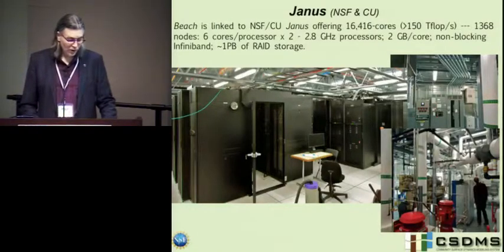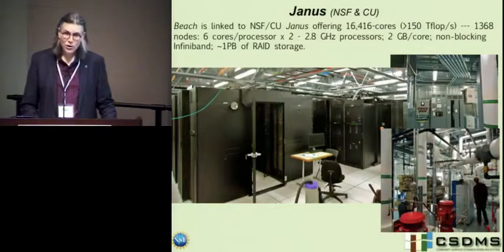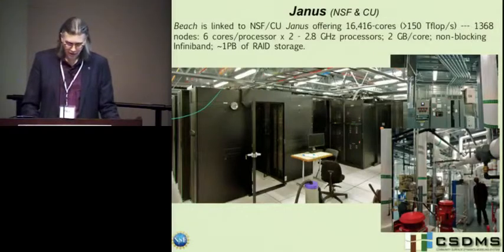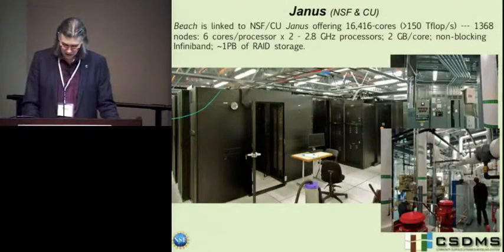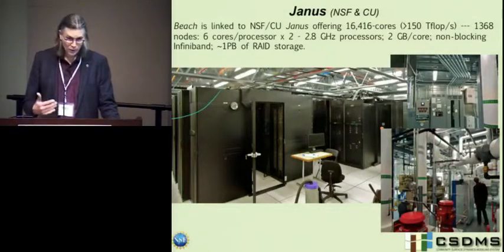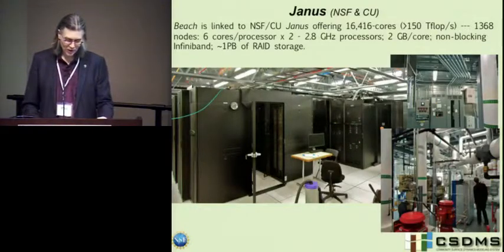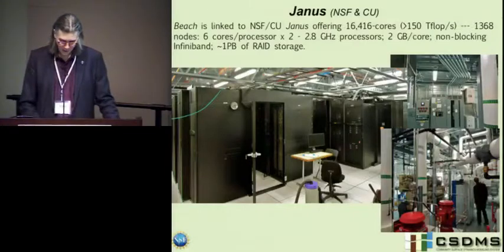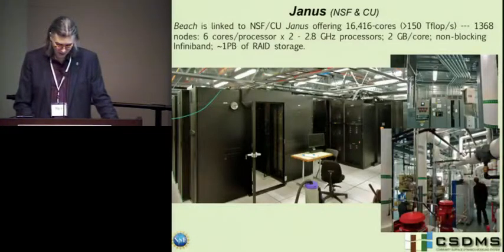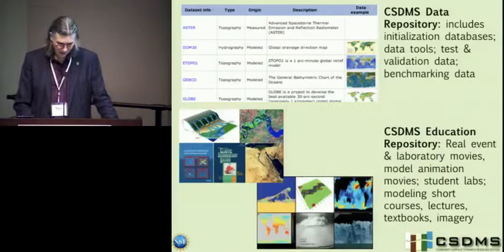On behalf of the NSF, our community has been identified as ripe to move to the next level — large-scale supercomputing. The NSF, along with a lot of money from the University of Colorado, has built a computer called Janus. This front-range computer was in the top 25 supercomputers in the world eight months ago. It has 16,416 cores and more than 150 teraflops. One of the clinics we offer at this meeting is to help our community — who really is not used to high-performance computing — learn to code in that manner.